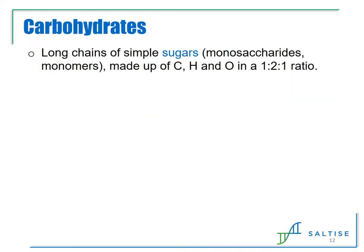Another major category of biomolecules is carbohydrates, which is probably familiar to everyone as it makes up a large part of our diets. They are long chains of simple sugars made up of carbon, hydrogen, and oxygen in a 1 to 2 to 1 ratio. The carbohydrate would be considered the polymer, and the simple sugar, also known as a monosaccharide, would be considered the monomer.